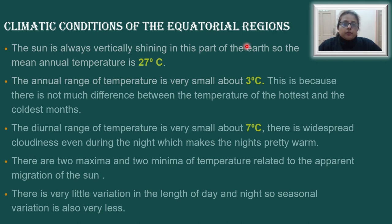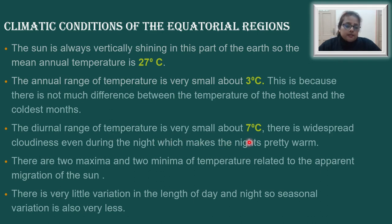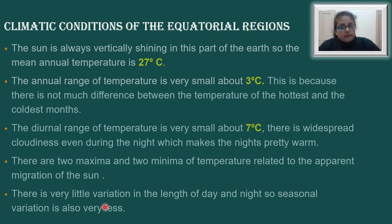The climatic conditions of the equatorial regions are as follows. The sun shines vertically in this part of the earth always, so the mean annual temperature remains 27 degrees centigrade. The annual range of temperature is very small — about 3 degrees — because there is not much difference between the temperature of the hottest and coldest months. The daily range of temperature is also very small, about 7 degrees centigrade. There are 2 maxima and 2 minima of temperature related to the apparent migration of the sun, and there is very little variation in the length of day and night, so seasonal variation is also very less.